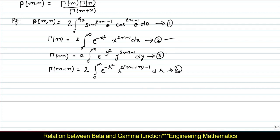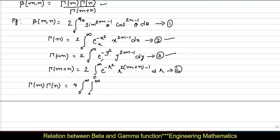Now, using equations 2 and 3, I can find the product of those two, as we require to prove beta of m comma n equals gamma of m into gamma of n divided by gamma of m plus n. So, gamma of m into gamma of n equals 4 times of double integral from 0 to infinity and 0 to infinity of e power minus x square into e power minus y square — bases are same, add the powers — giving e power minus of x square plus y square, into x power 2n minus 1 into y power 2m minus 1 dx dy.